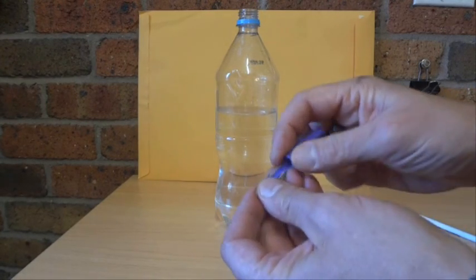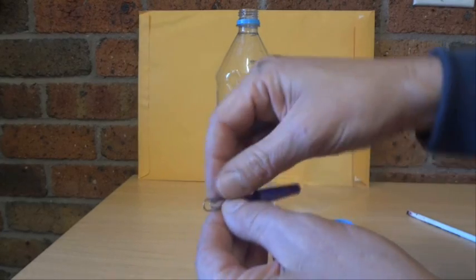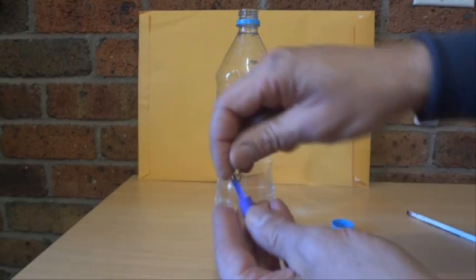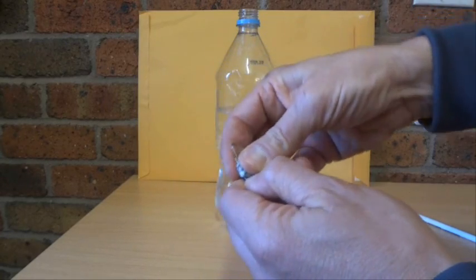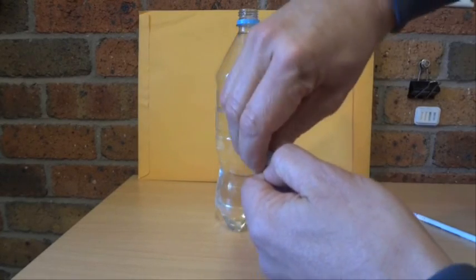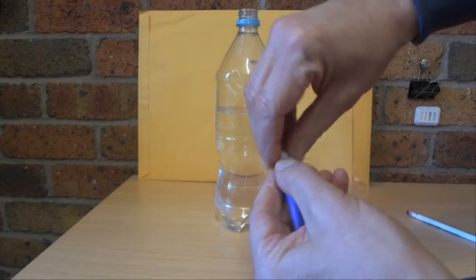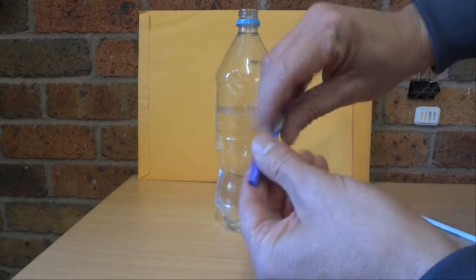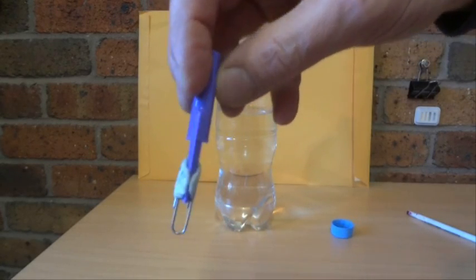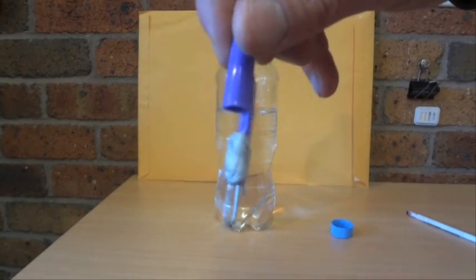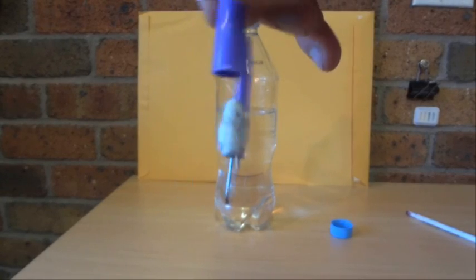Okay so what we'll do first is with a bit of blue tack, we'll just push that around the paper clip and onto the pen top, all the way around so it holds your paper clip onto the pen top and that gives you a bit of weight.